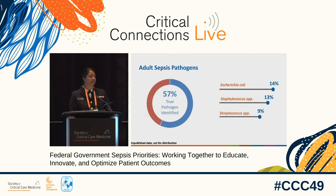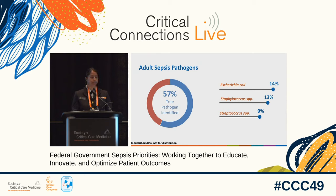In 57% of adult sepsis cases, a true pathogen was identified. The top three pathogens identified were E. coli, staph species, and strep species.